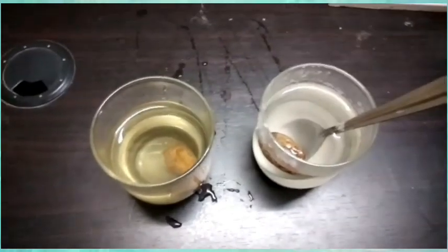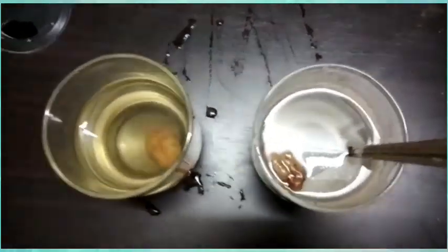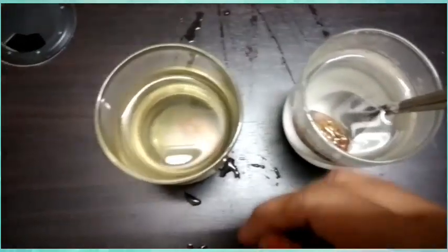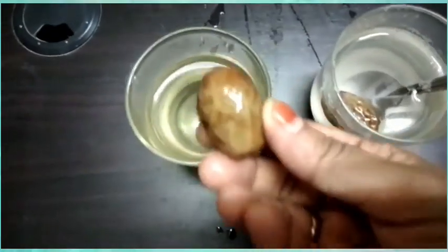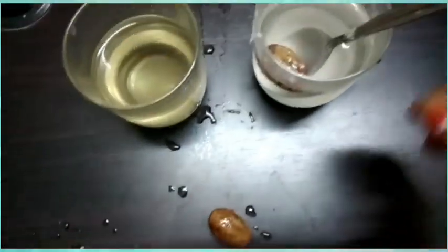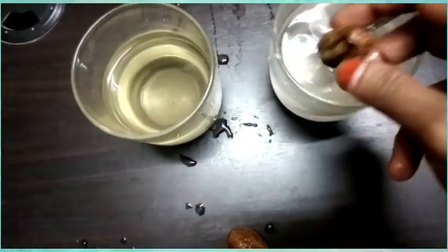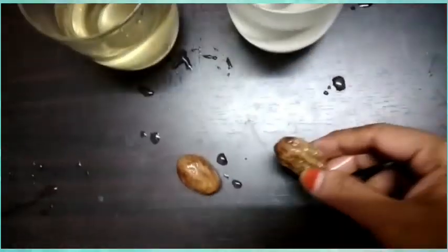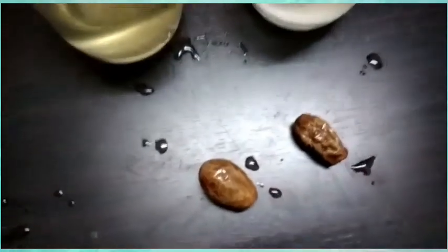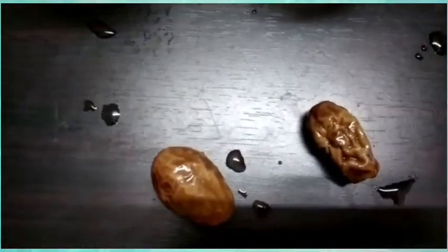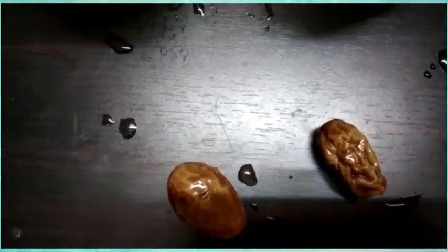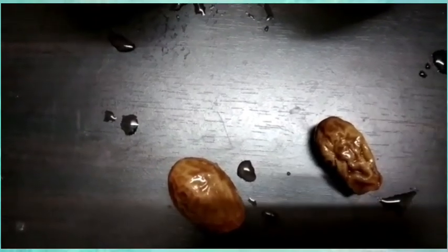we can observe that the date which is kept in normal water will increase its size. Because the cells that are present outside of the dry date will allow the water molecules to enter into the cell. And the date which is kept in salt water will decrease its size because the amount of water that is present inside the cell will leave the cell.